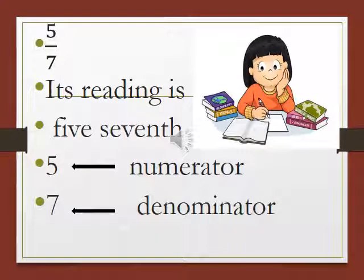See here, one more fraction: 5/7. Its reading is 5 7ths. Top number is 5, so it is numerator. Bottom number is 7, so it is denominator.